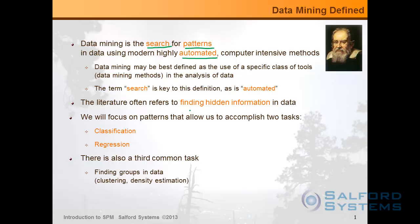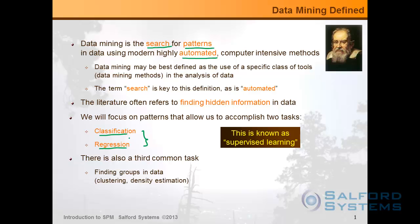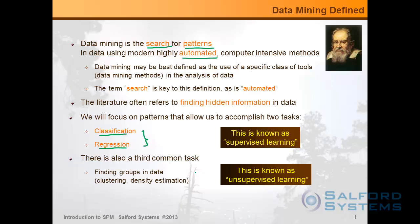We will essentially try to clarify some of the parts as we move on. In our work, we primarily focus on two tasks: classification and regression, jointly known as supervised learning. When you solve a classification or regression problem as a statistician, you're usually interested in predicting or explaining a specific outcome. If that outcome variable is categorical, binary, or multinomial, you're talking about classification. If you're predicting a continuous outcome, that's regression. There's also a third common task known as unsupervised learning — that's when you're looking for groups in data without pointing to a specific variable to guide your learning.